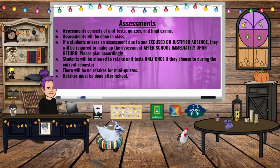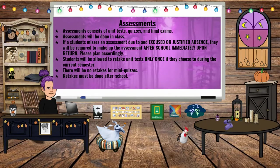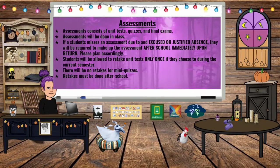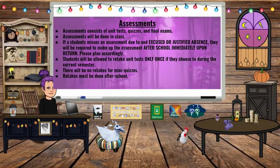My assessments consist of unit tests, quizzes, and the final exam. Assessments will be done in class. If students miss an assessment due to an excused or justified absence, they will be required to make up that test after school immediately upon return. I also allow students to retake unit tests once per unit — if they don't do well, they can come by for tutoring and then take a retake. There are no retakes for mini quizzes, and retakes must be done after school.